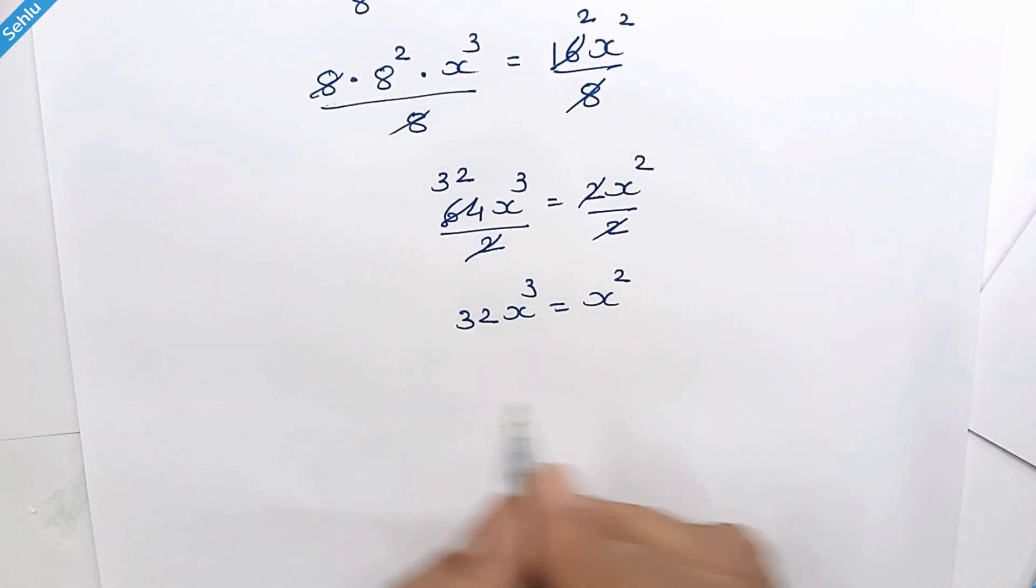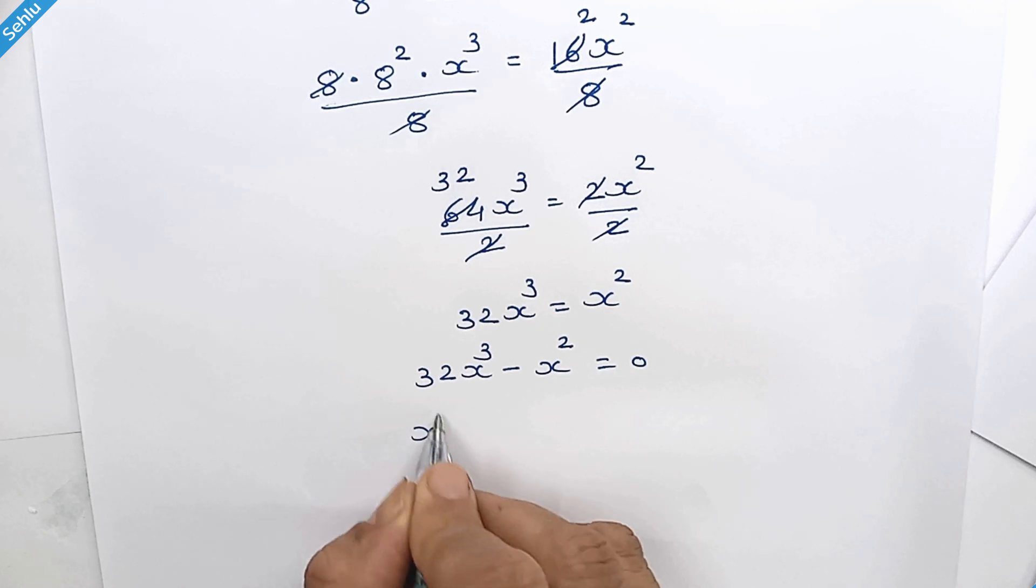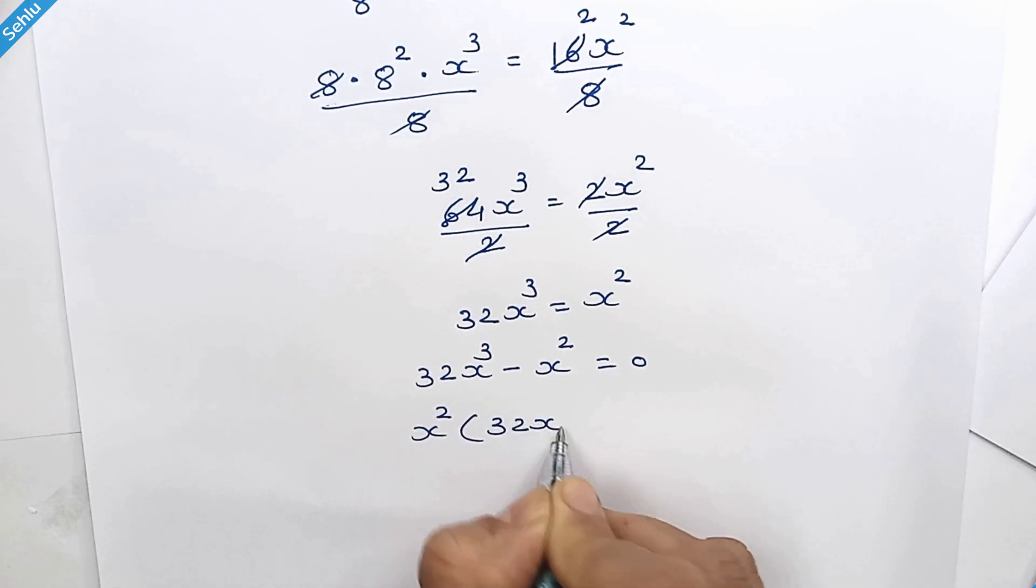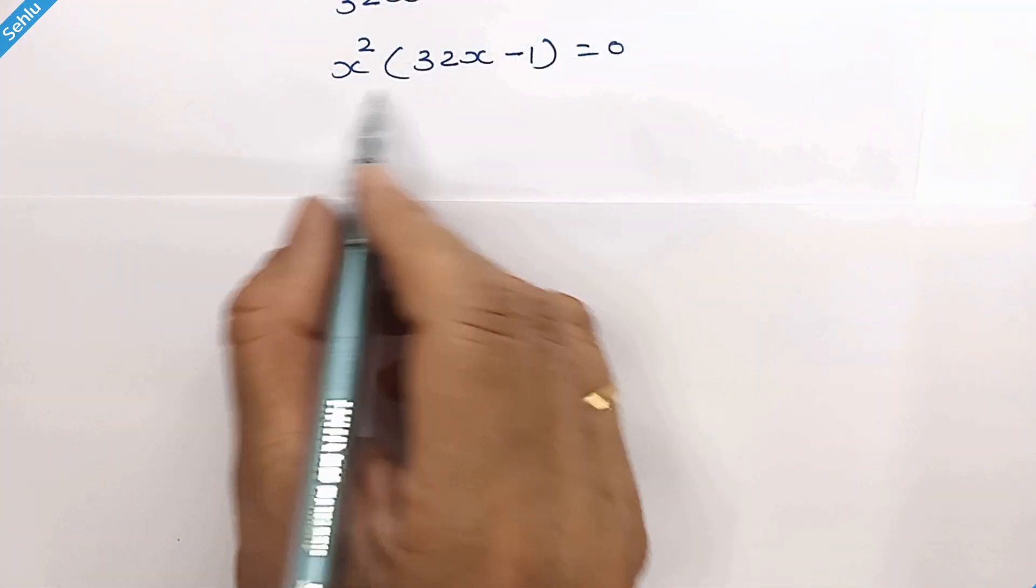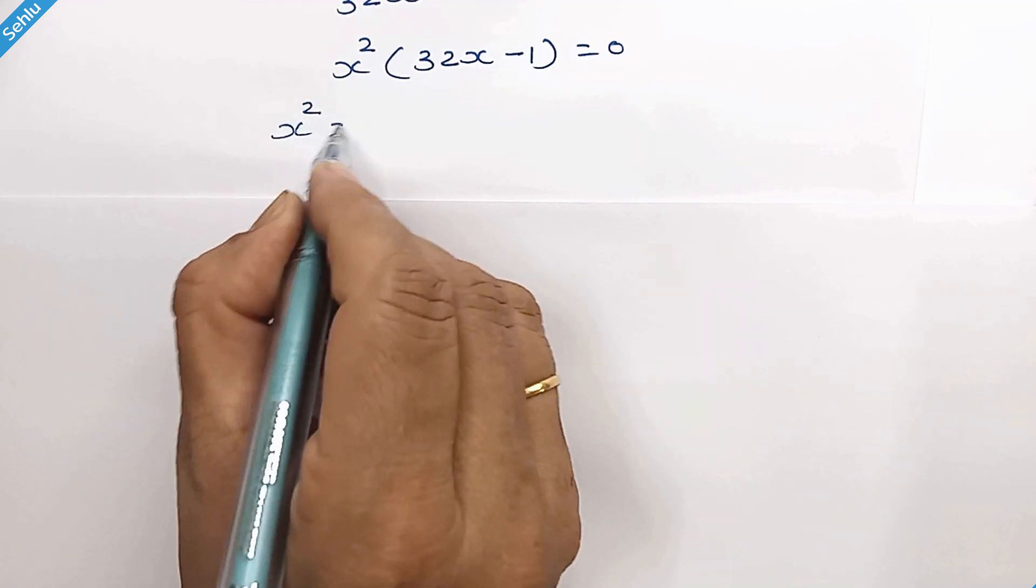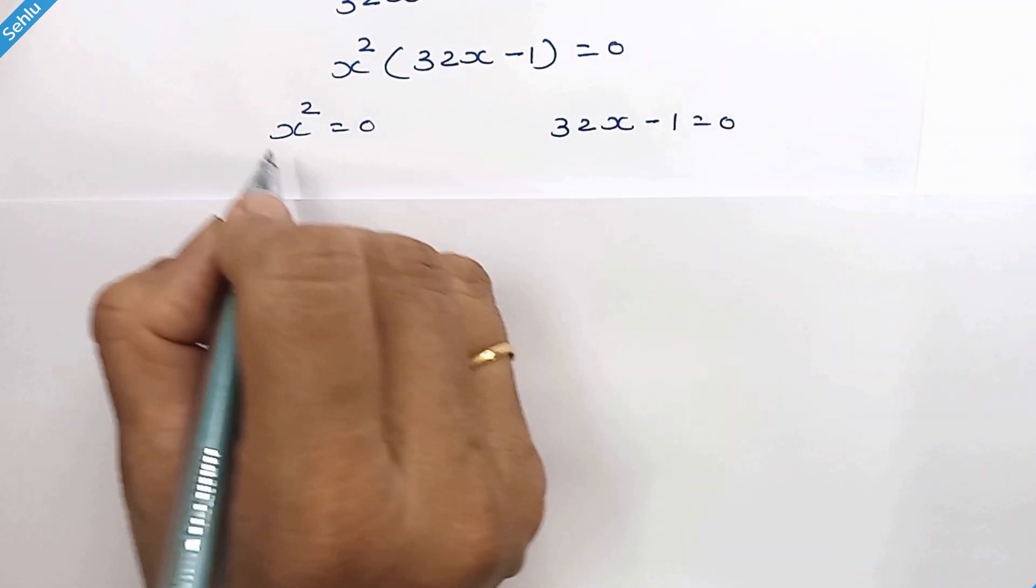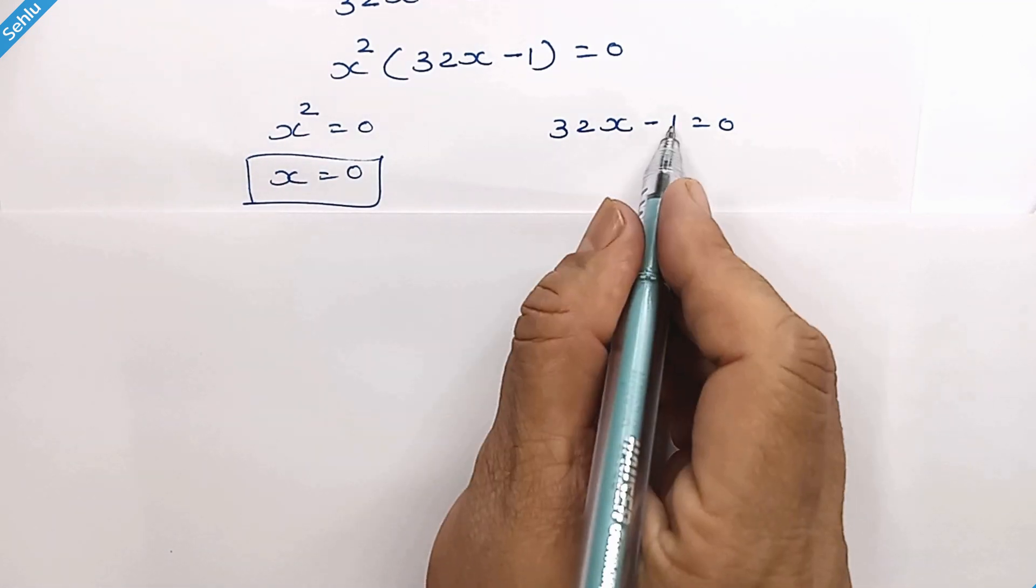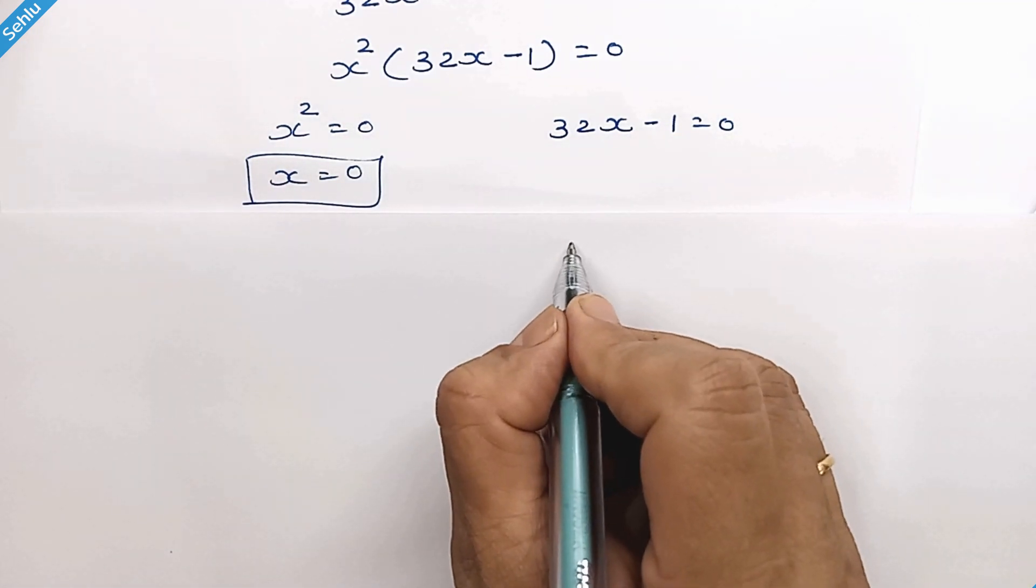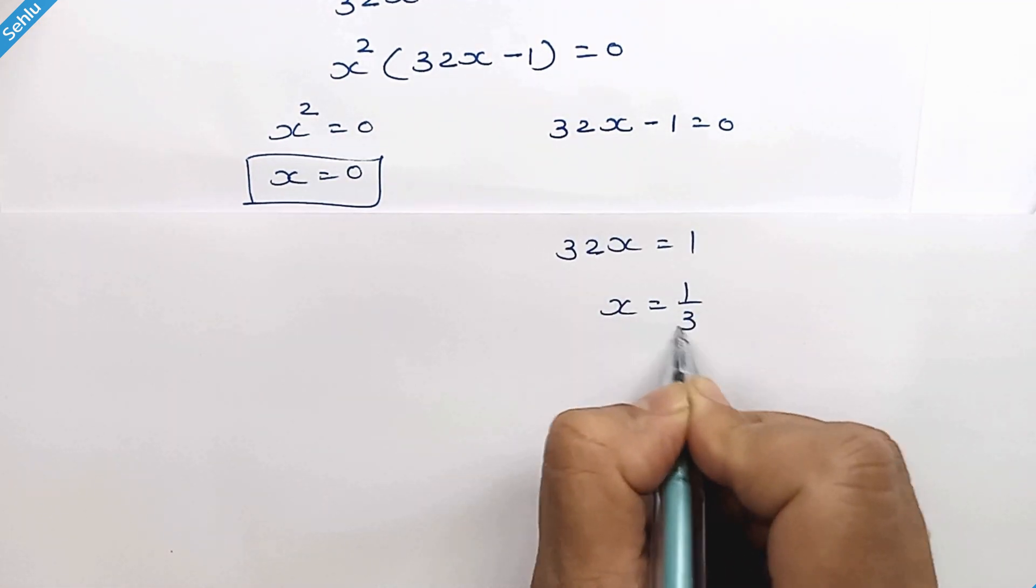Move this part to here on left hand side. Taking x square common. This means x square is equal to 0 and 32x minus 1 is equal to 0. So here we have x is equal to 0. And move this one on right hand side. So it will be 32x is equal to 1. So x is equal to 1 over 32.